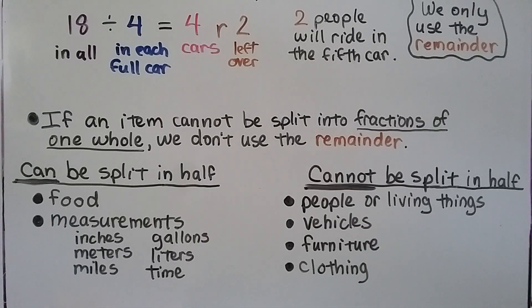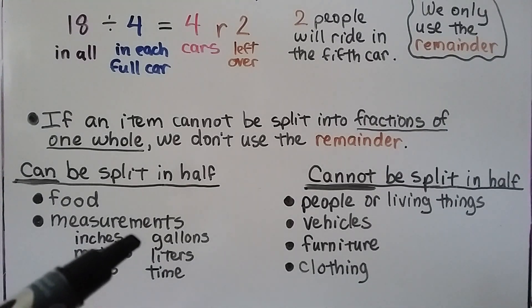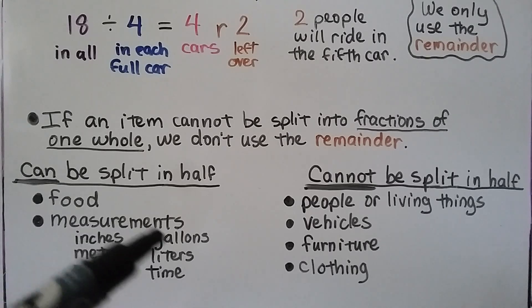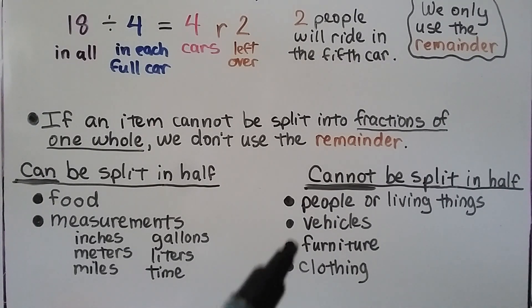If an item cannot be split into fractions of one whole, we don't use the remainder. So here are some things that can be split in half. Food, like we split the cookie in half. We can even split measurements in half, or thirds, or fourths, or fifths. We can split it up without hurting it. So we could have gallons, and we can split those up, or meters, or miles. We can even split up time, like hours and minutes and different increments of time.